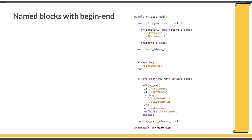Finally, before winding up, I wanted to give an introduction to named begin-end blocks. Sometimes you will see a named block associated with begin-end in a testbench or in design. You can name a begin-end block — a block is always written within begin and end keywords. To name the block, after the begin keyword, give a colon and then the name of that block, for example initBlock1.